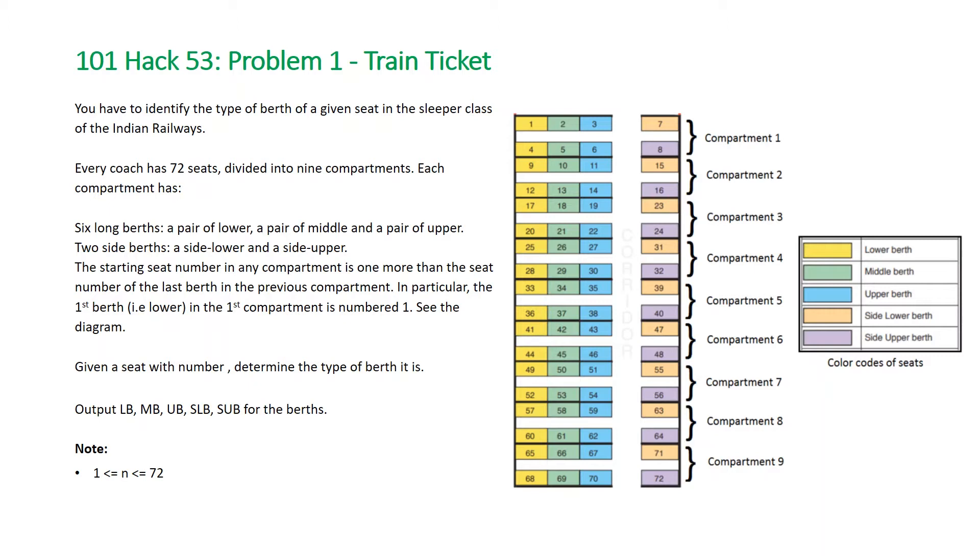And the question asks, given a seat number, determine what type of berth it is. And you should output this as LB, MB, UB, SLB, SUB for the corresponding berths.